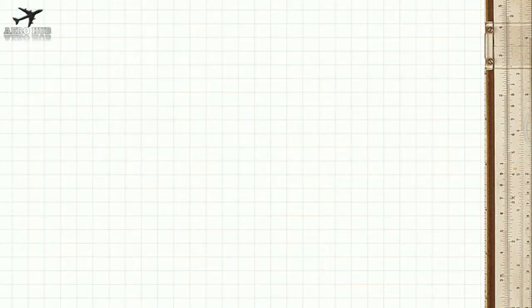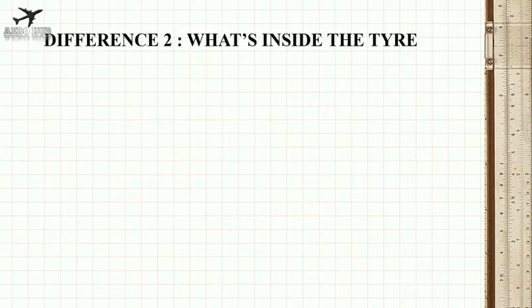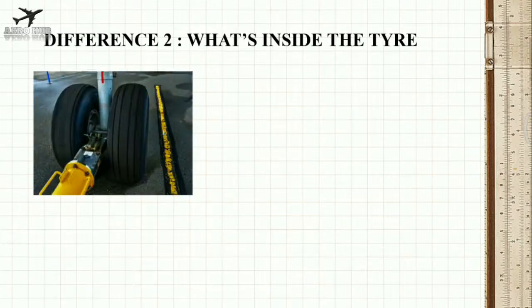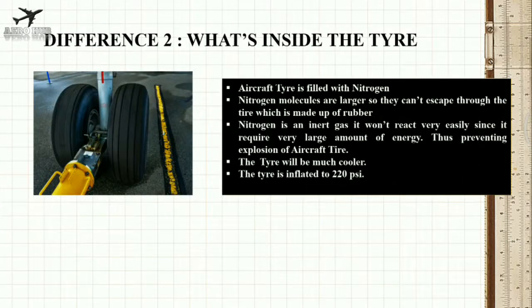Difference 2: What's inside the tire? Aircraft tires are filled with nitrogen. Nitrogen molecules are larger, so they can't escape through the rubber tire. Nitrogen is an inert gas — it won't react very easily since it requires a very large amount of energy — thus preventing explosion of the aircraft tire and keeping the tire much cooler.